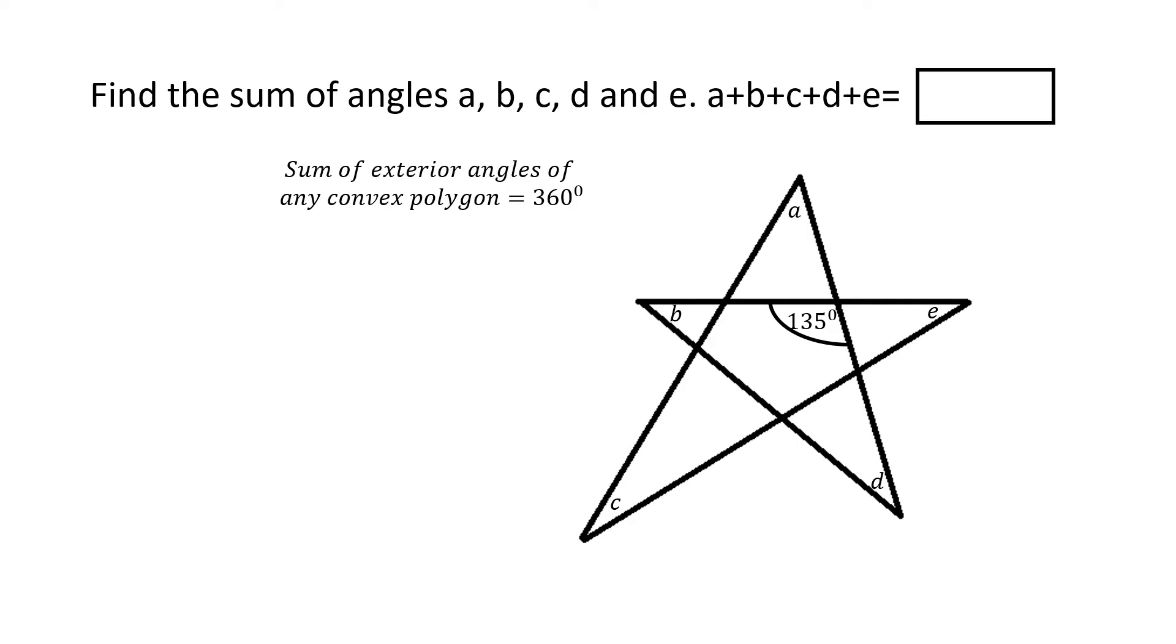By convex polygon I mean that none of the interior angles exceed 180 degrees. So we don't have a reflex angle situation in any of those interior angles of the polygon. This is true for any convex polygon. No matter what the number of sides is, it may be 5 or 6 or 7 or 8, the sum of the exterior angles of the polygon should always equal 360 degrees.